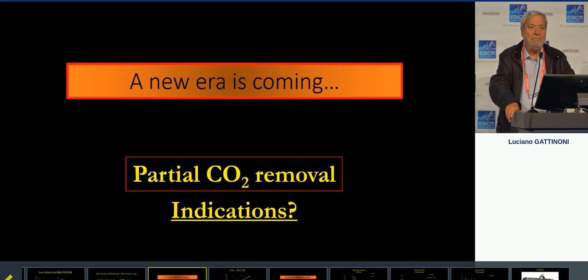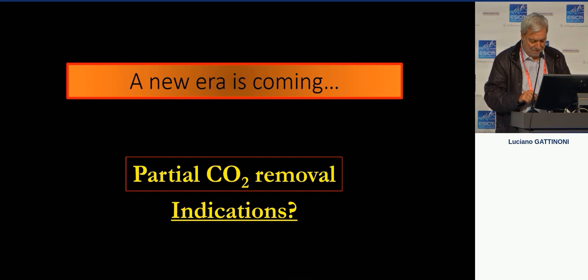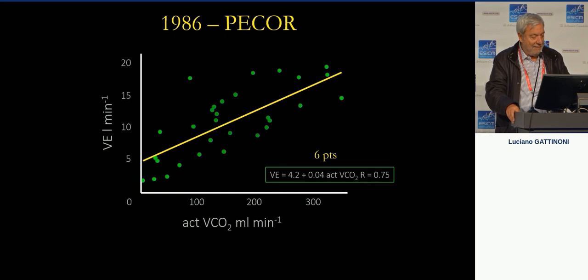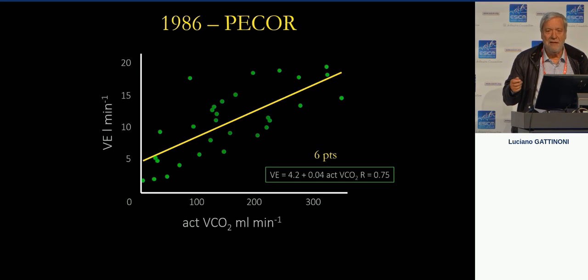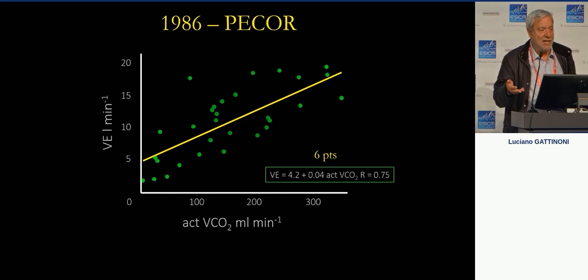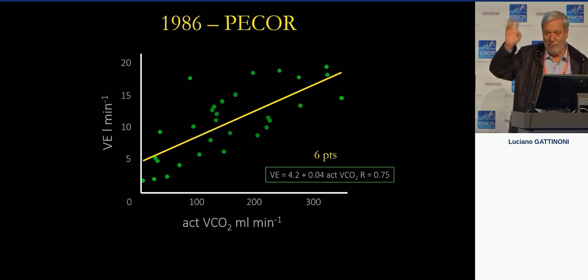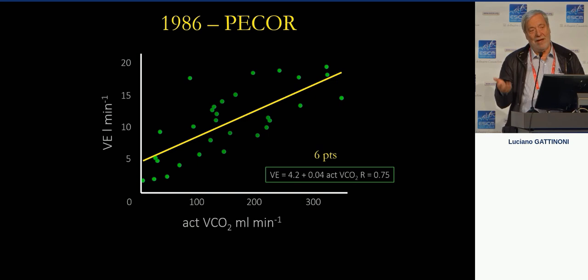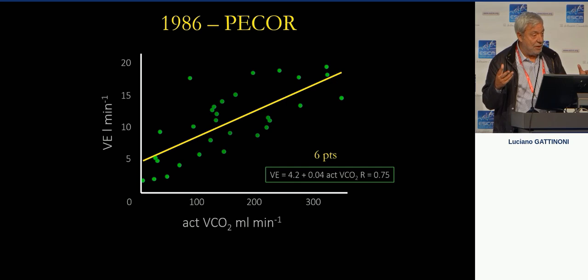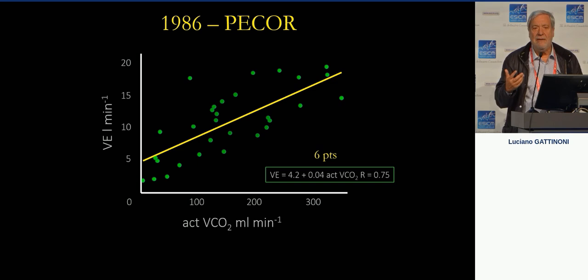A new era started not many years ago: partial CO2 removal. I think we first did this in 1986. Patients were in quite good condition — a patient with bronchopleural fistula, for example, where any time you ventilate you maintain the leakage. Extracorporeal CO2 removal helps — and you can imagine many situations where control of ventilation using this approach is appropriate.